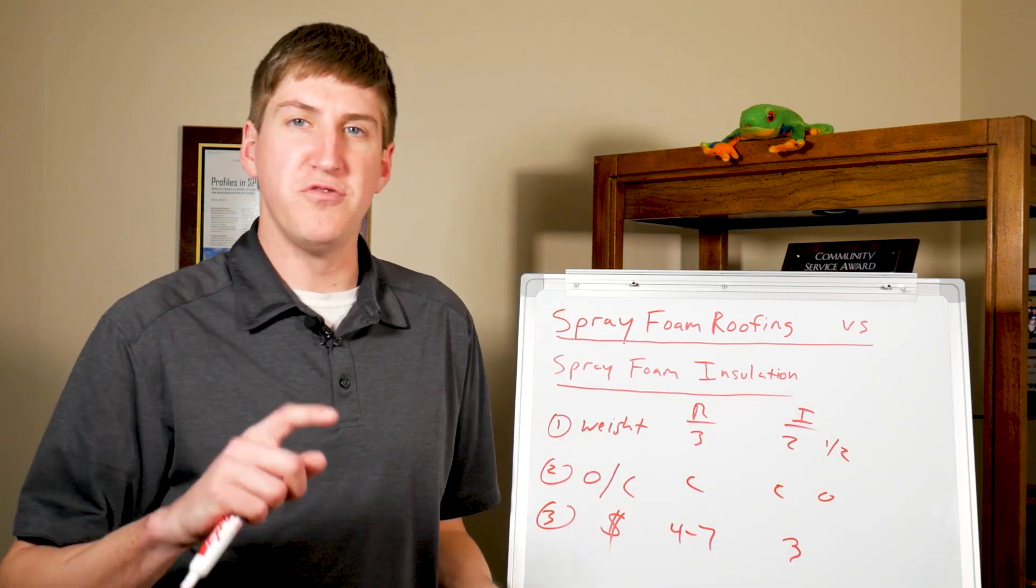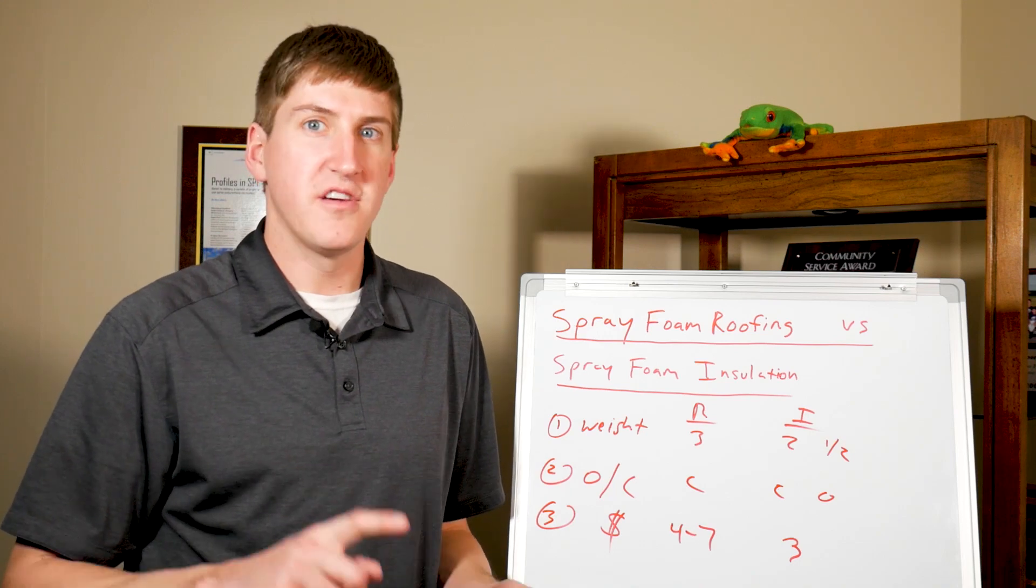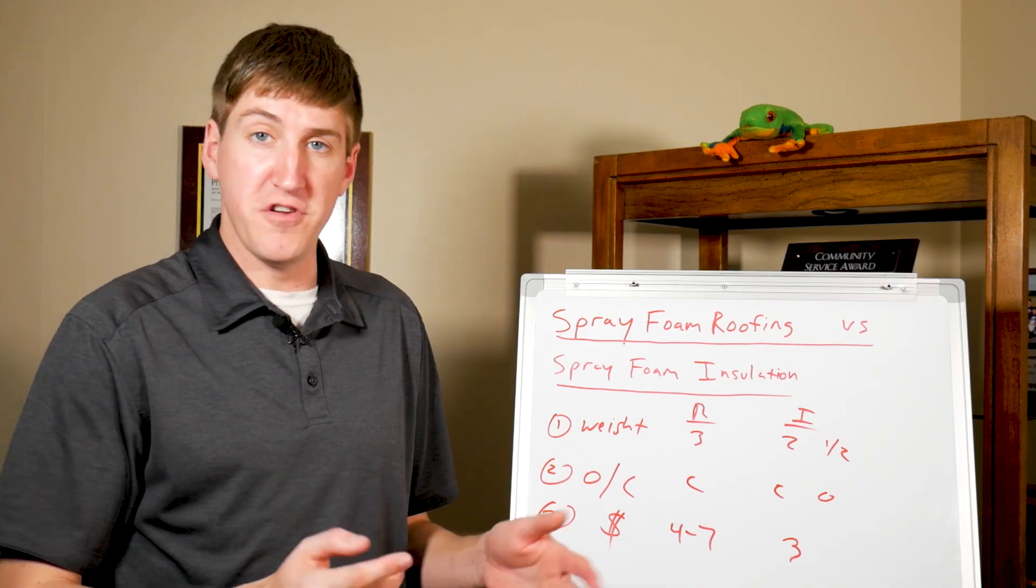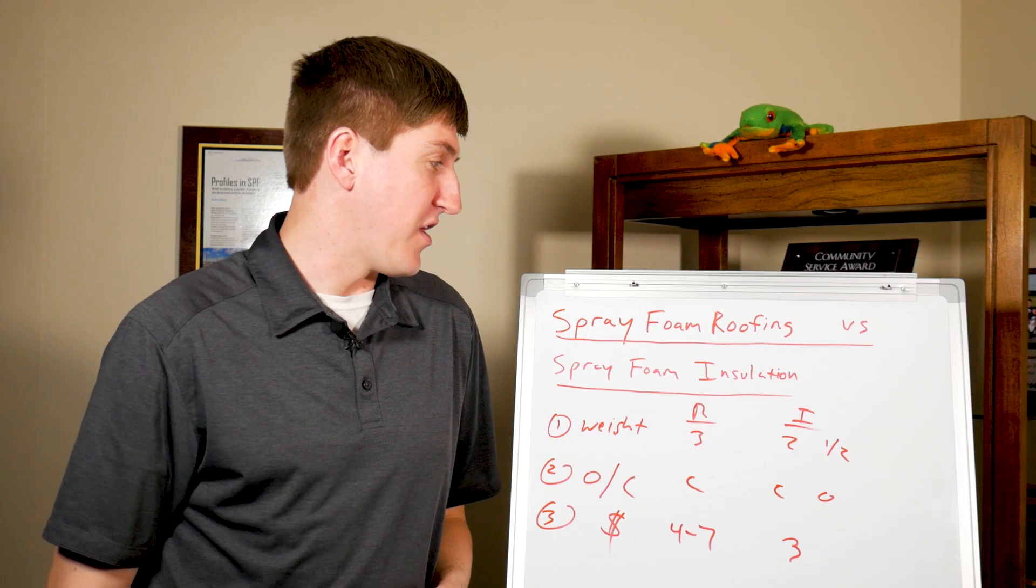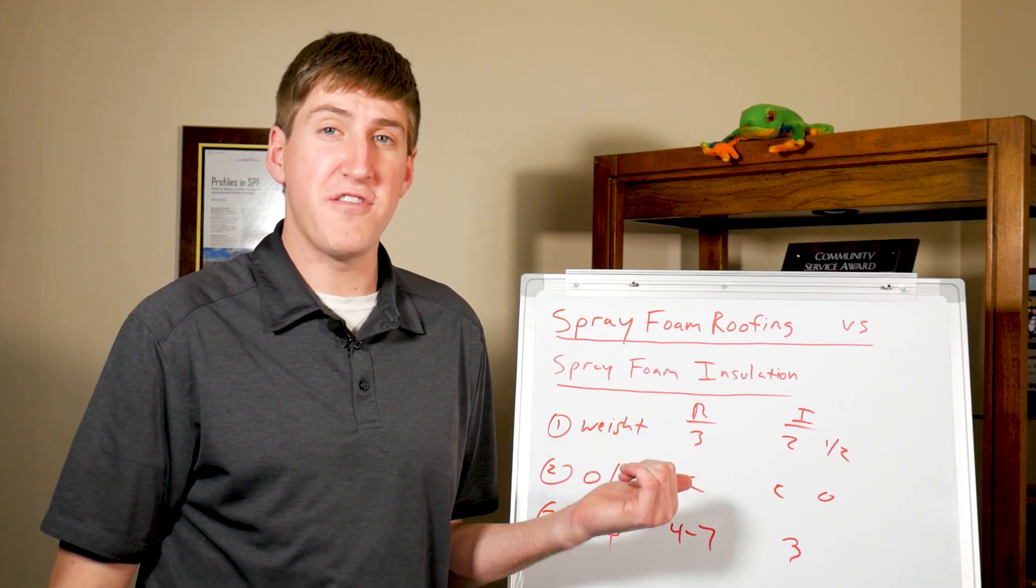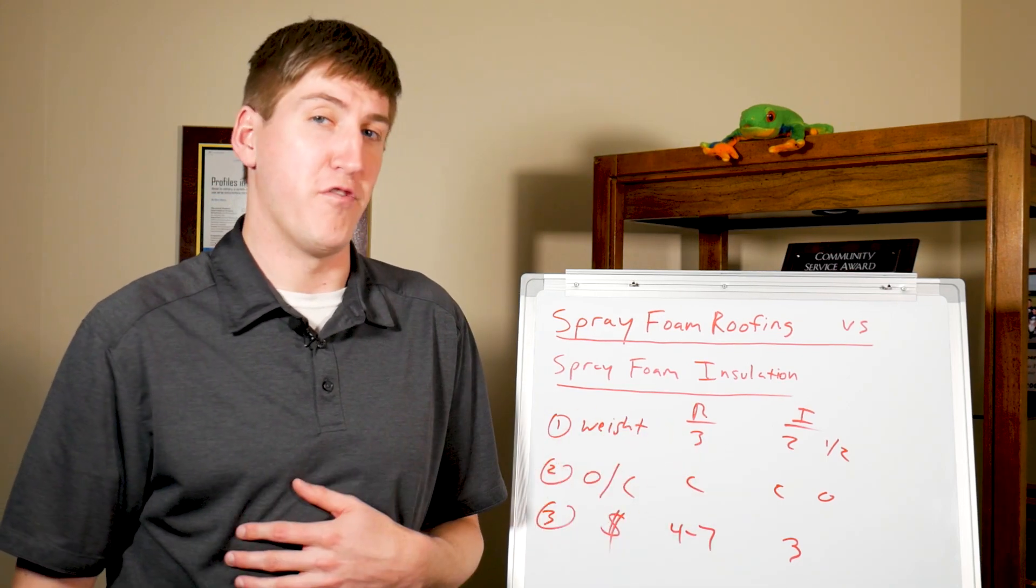And during a roofing project we have to do two layers of coating and granules to protect it from UV rays. Obviously when you're spraying foam insulation interior, there's no UV rays that you need to guard the spray foam from.